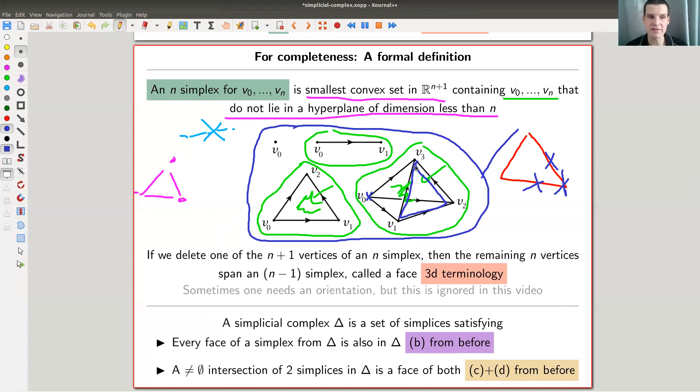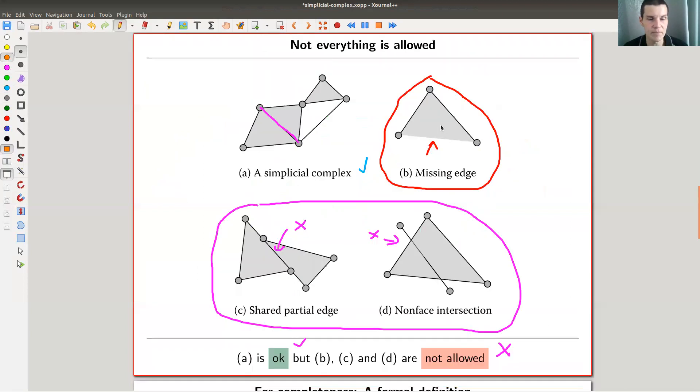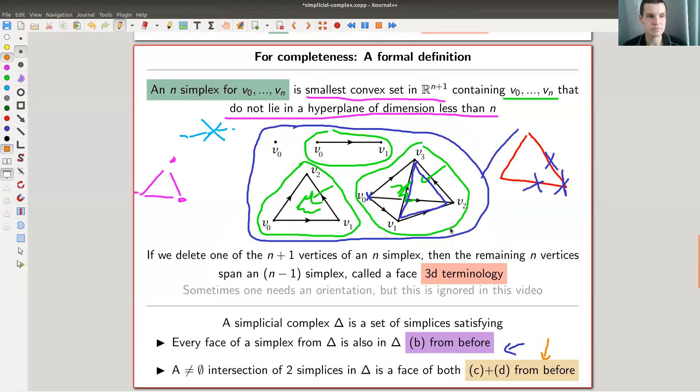And a simplicial complex is then a set of simplices, and simplices are those guys here satisfying exactly those two conditions. So you rule out condition B and condition C and D from before. So you glue them together such that this just doesn't appear. That's the definition of simplicial complex.